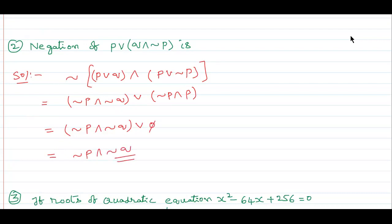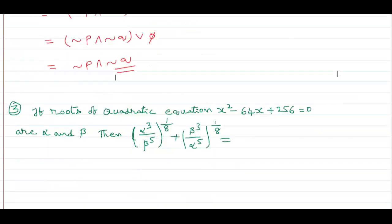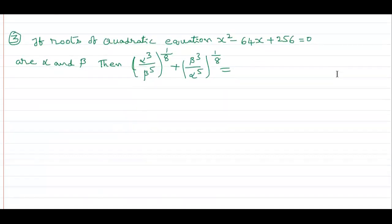The answer is null set. This is also very easy. Now I am going to the third question. See the third question — this is quadratic related. The roots of the quadratic equation x squared minus 64x plus 256 equals 0 are alpha and beta.